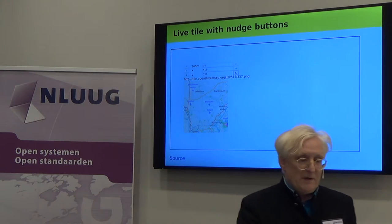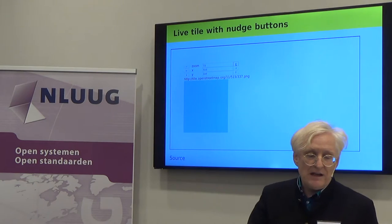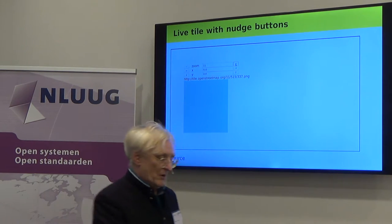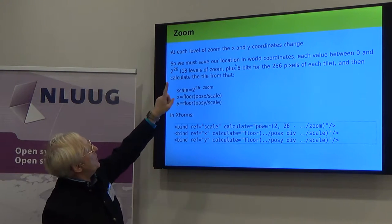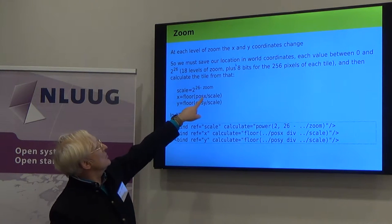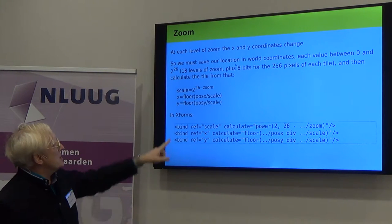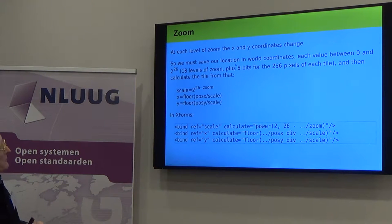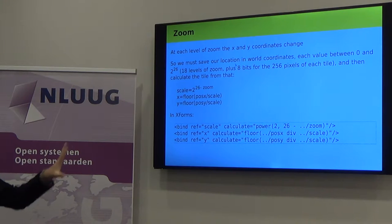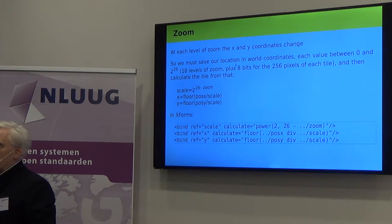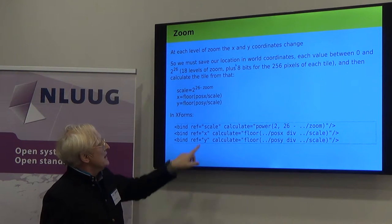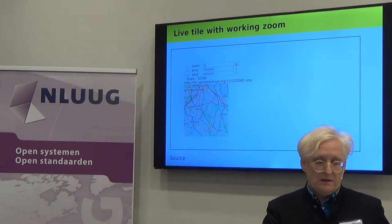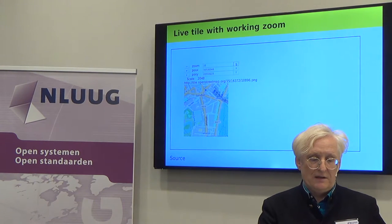A problem with the URL is that at each level of zoom, the world coordinates double. So you can't use the same X and Y for a different level of zoom — you have to do a bit of calculation. What we do is keep the X and Y coordinates for a position in the world, called posX and posY, and we calculate the tile X and Y from that just by dividing by the scale. The scale is 2 to the power of (26 minus the zoom level) — there are 8 levels of zoom and 8 bits for the 256 pixels of the tile. We just do that with a bit of XForms that calculates those values. So now, as I zoom in, I really do zoom in on the place I've got.